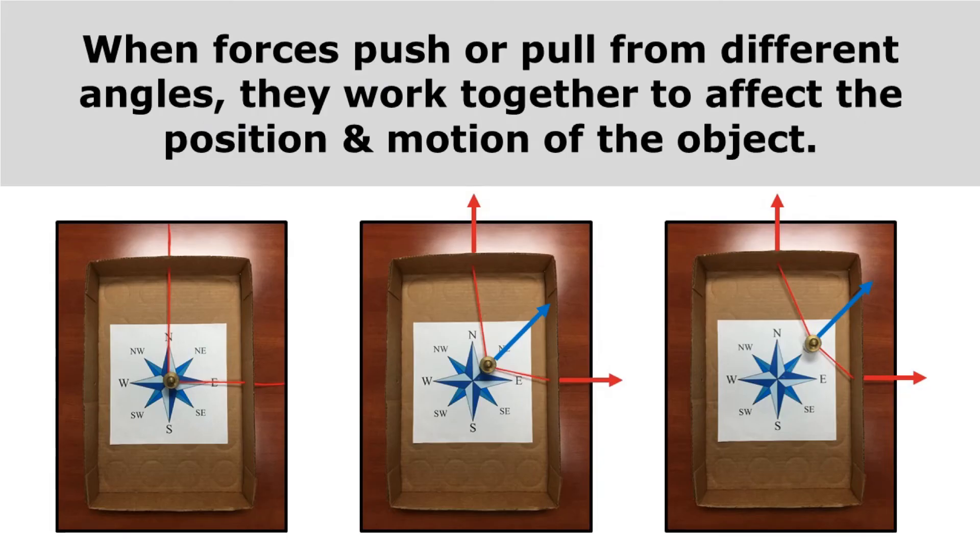When forces push or pull from different angles, they work together to affect the position and motion of the object. You can see here that there's a weight with two red strings attached. When those red strings get pulled directly to the north and to the east, that causes the weight to move at an angle. It moves in the diagonal direction. That's because those forces are working together and they combine. So instead of going straight to the north or straight to the east, it goes to the northeast.